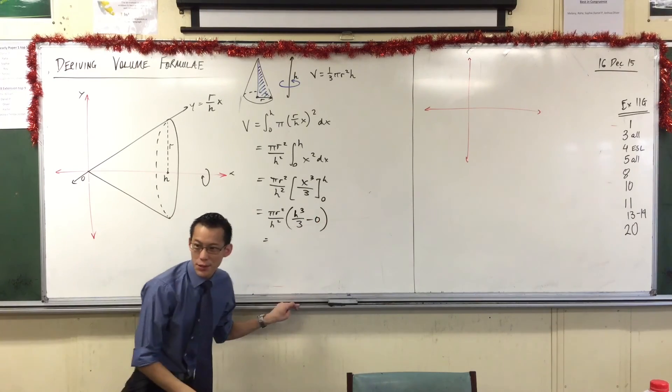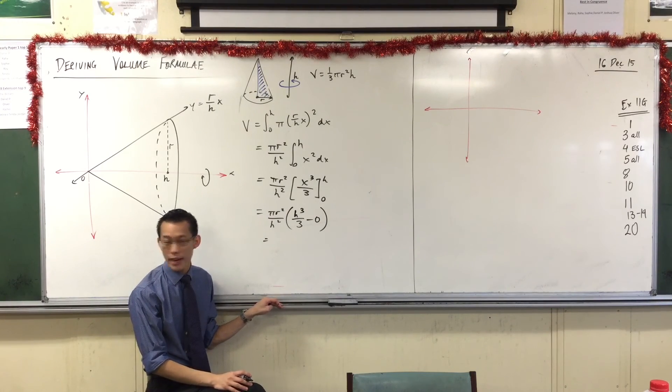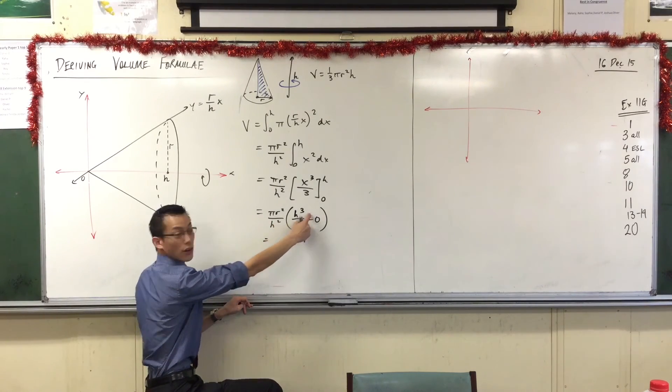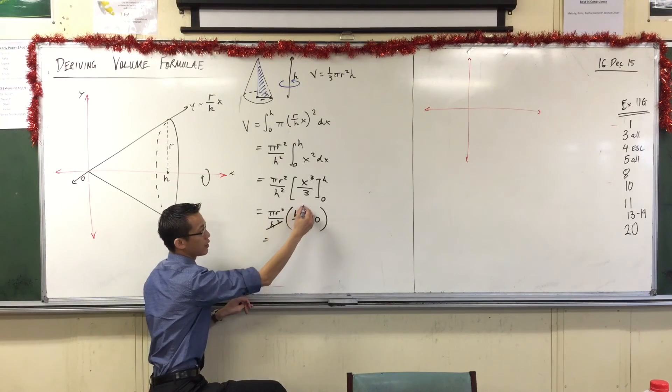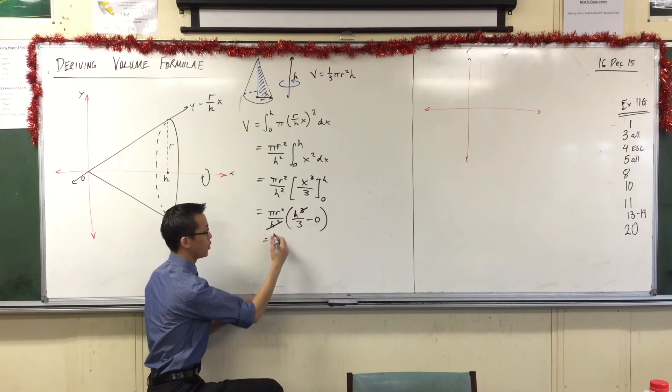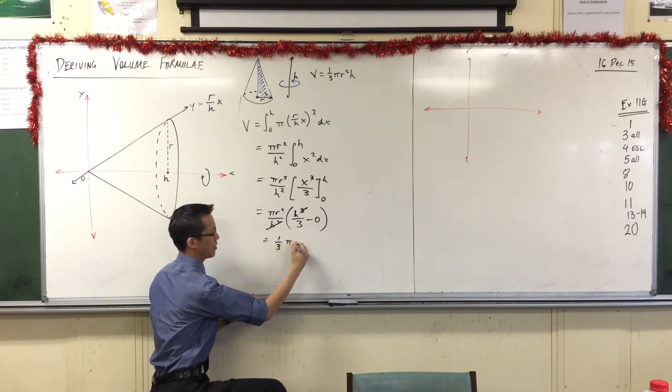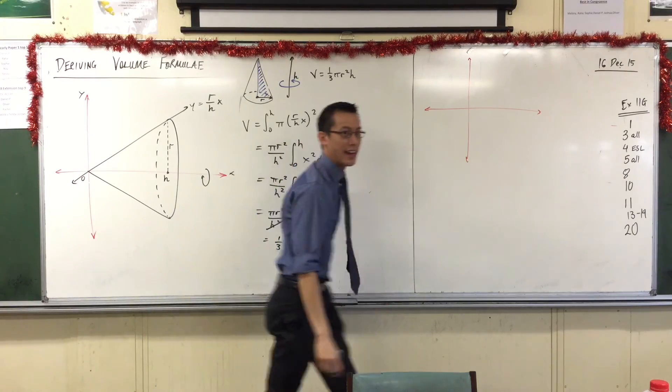And then, when you have a look, you're like, ooh, I have some h's that are going to cancel. I've got two h's here, I've got three of them there. These will all go leaving one behind, up there. Which leaves you with, magically, a third pi r squared h. Is that beautiful, or is that beautiful?